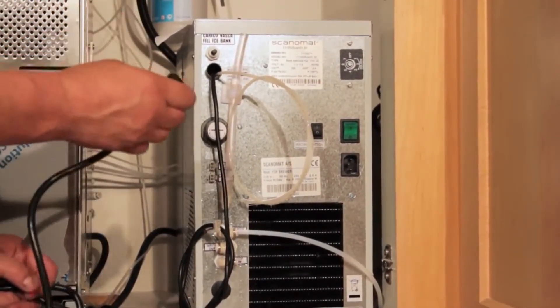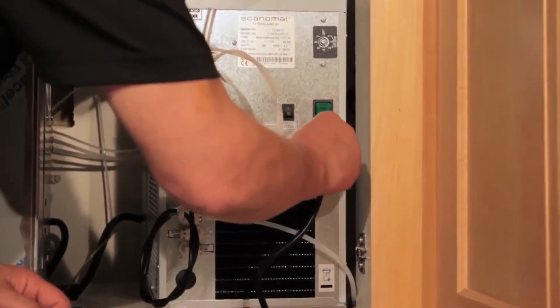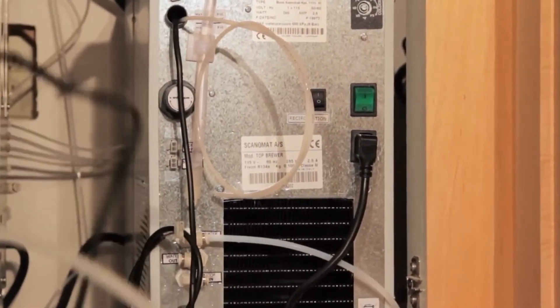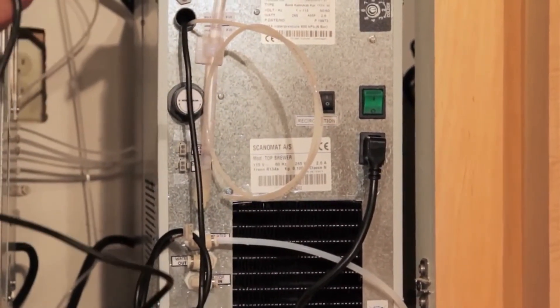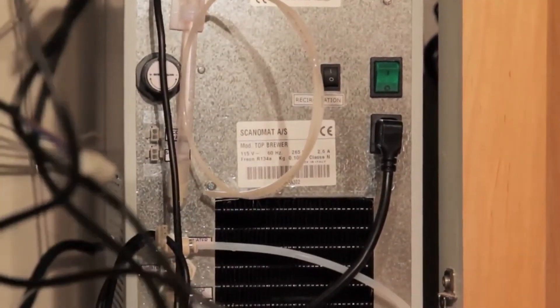Before we turn the ice bank around and put it in place, let's make our connections. We'll start with power plug followed by our signal cables. We have signal cable for water as well as sparkling water.